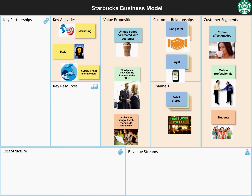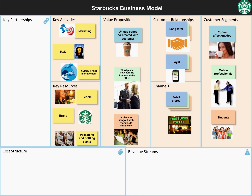These activities require some key resources. They include its people, who are very loyal to Starbucks due to the way they are treated, its brand, which is one of the most ubiquitous and valuable brands in the world, and its packaging and bottling plants.